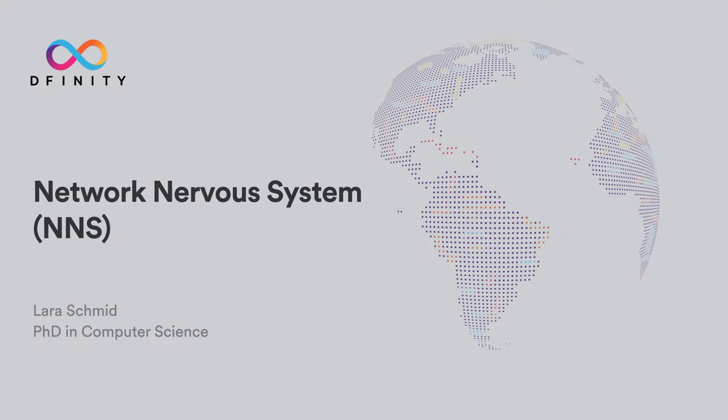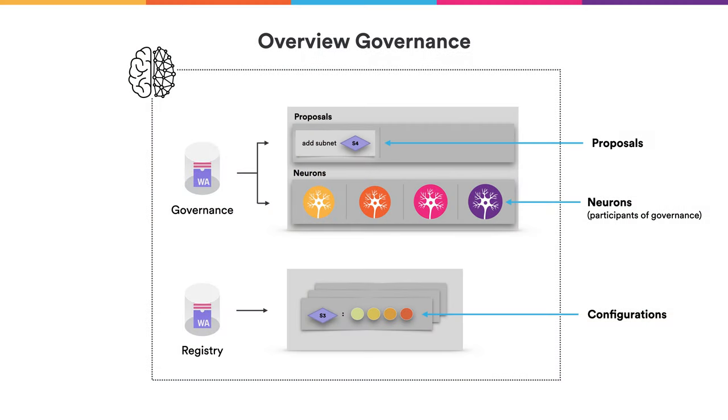On a high level, the network nervous system, or also called NNS, is realized by a set of canisters. For making decisions, mainly two canisters are important. The first one is the governance canister, and the governance canister stores two things. First, it stores proposals, which are basically just suggestions how the internet computer should be changed.